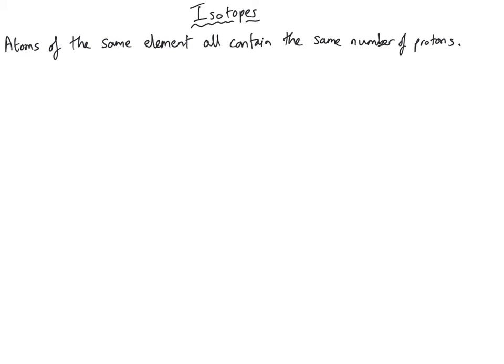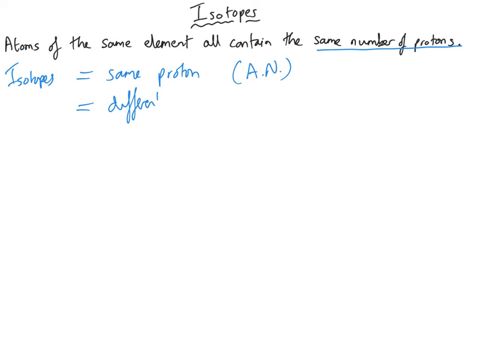Atoms of the same element have the same number of protons. All atoms of potassium have 19 protons and 19 electrons. But they don't necessarily all contain the same number of neutrons — protons and electrons are always the same, but neutrons can vary. This is where isotopes come in. Isotopes have got the same number of protons — the same atomic number — but different numbers of neutrons, and as a consequence they have a different relative atomic mass or mass number.